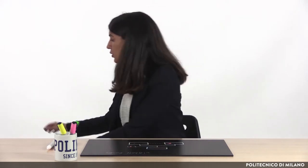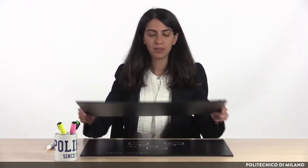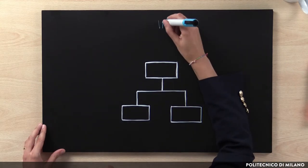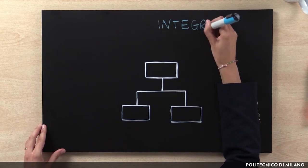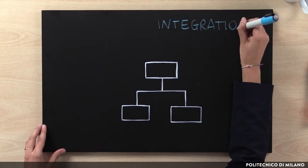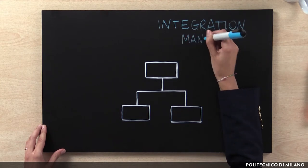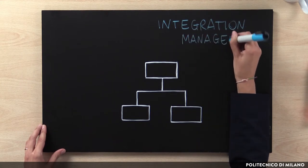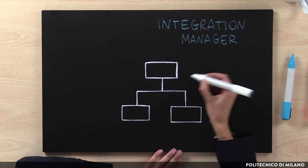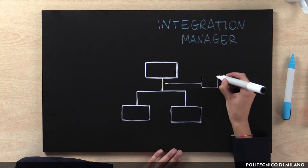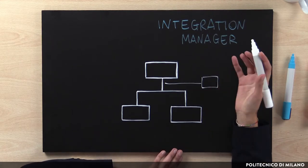Another coordination mechanism at the macro level is the integration manager. Integration managers are somehow similar to liaison roles, but they are different because they are not dedicated to just two organizational units. Indeed, they are specific organizational positions that are in charge of coordinating and integrating activities that are related to the same output across different units.